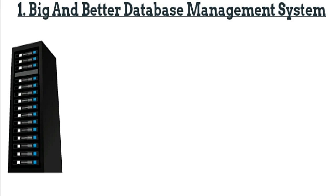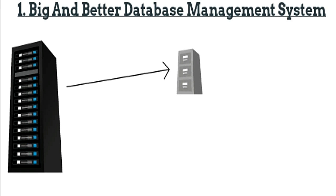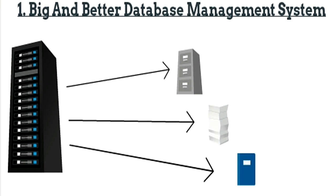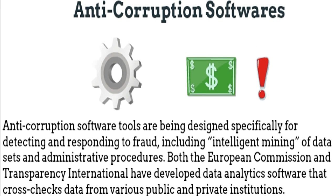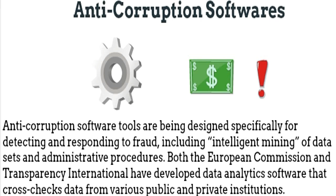Let's look at the first heading: big data and better records management. It allows sharing of information which improves data-related efficiency, addresses risk and capacity problems, and increases collaboration between various departments. Anti-corruption software is specifically designed for detecting and responding to frauds and illegal administrative procedures. Government can create software through which they can cross-check data of various public and private institutions.